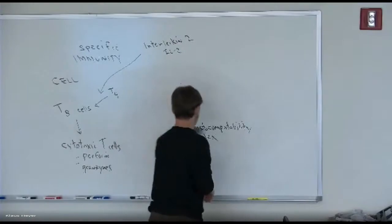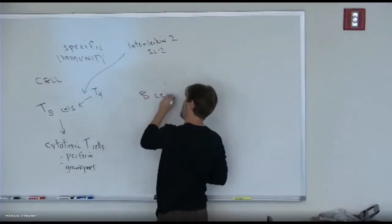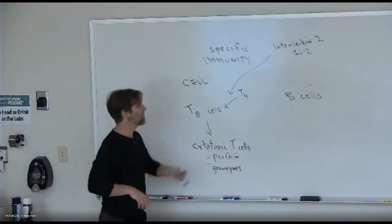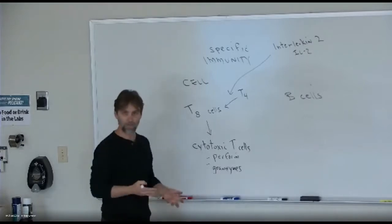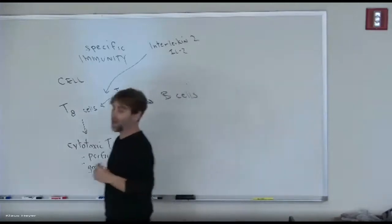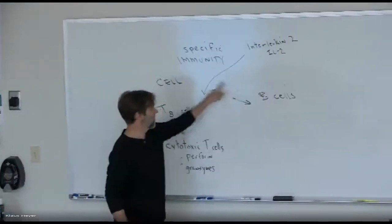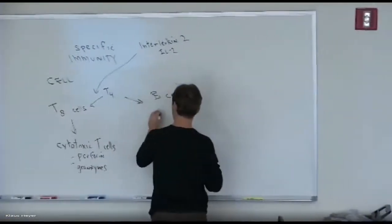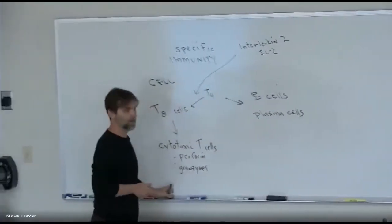The same story applies to B cells. B cells encounter antigen-presenting cells, get stimulated, look to T4 cells for confirmation, receive interleukin-2, and start cloning into plasma cells. Those plasma cells secrete antibodies. So both the cell-mediated and antibody-mediated arms require the same two stimulations and the same command-and-control approval from T4 helper cells.